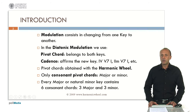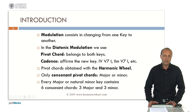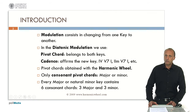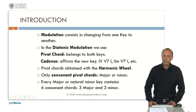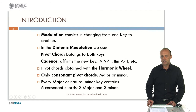The pivot chords can be obtained with the harmonic wheel, as well as in the traditional way. We will compare both ways. For simplicity, we will consider only consonant pivot chords, that is major and minor chords. We should remind that every major or natural minor key contains six consonant chords, three major and three minor.